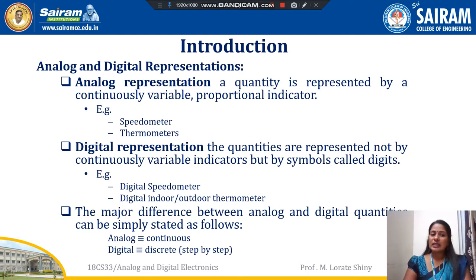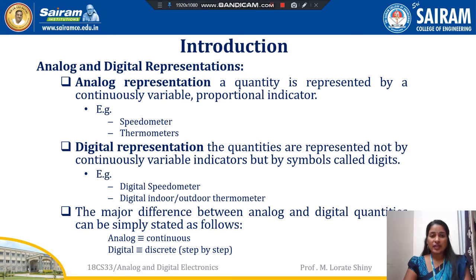Analog and Digital Representation. In analog representation, a quantity — it may be any physical quantity — is represented by a continuously variable proportional indicator. For example, we can say speedometer and thermometer output; their outputs are in analog form.